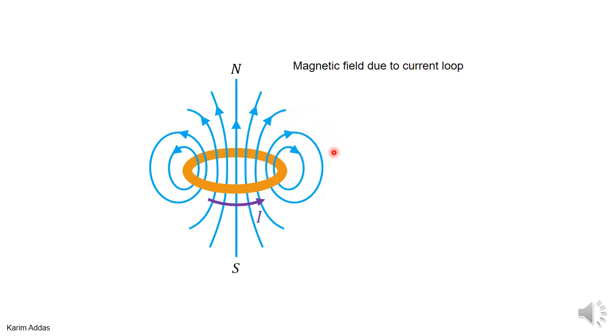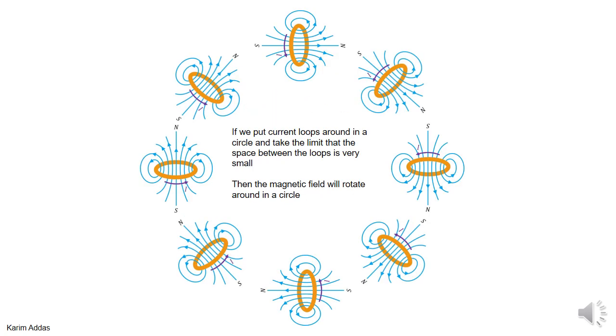What if you take that loop of current and put another loop of current next to it with a different angle, and another one going round in a circle, such that the magnetic field lines point in the same direction? Now as you make the number of loops more and more, closer to each other, and many more of the loops...